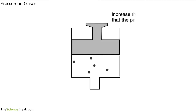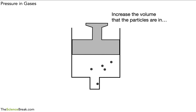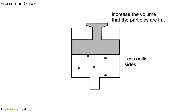If we were now to increase the volume — increasing the space that the particles are in — the particles still move around randomly, far apart, in random directions, but they collide less with the sides of the container. So there is a lower pressure inside that container. We can see how changing the volume that a gas is in will change the pressure inside that container.